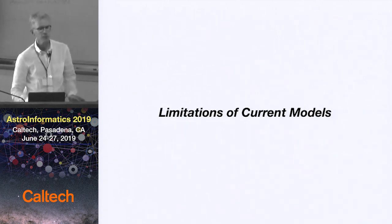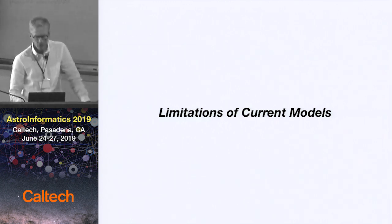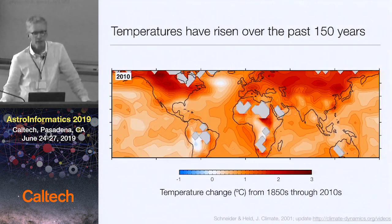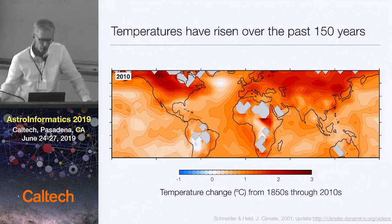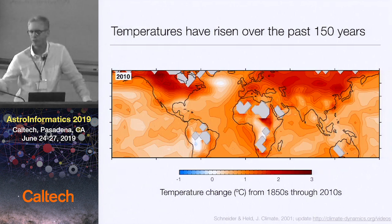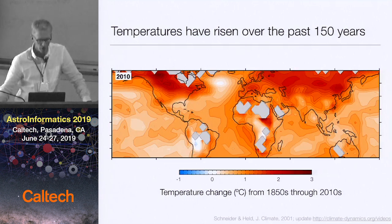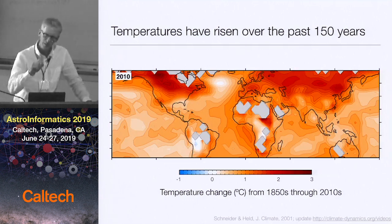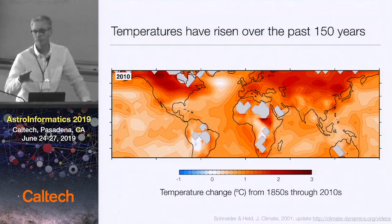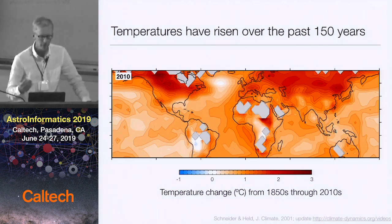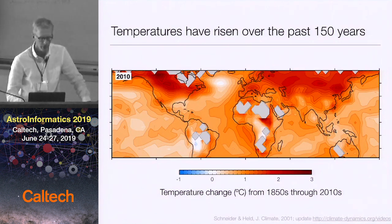Let me tell you about limitations of current climate models and how we think we can overcome them. If you look at temperature change over the last 150 years — the mean temperature increase since the 1850s — earth has warmed everywhere. It's truly global warming. Continents have warmed more than oceans, not due to lower heat capacity, but because there's limited water available to evaporate over continents. We expect continents and high latitudes to warm faster, and they have.